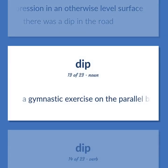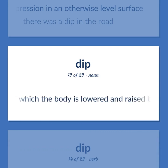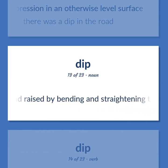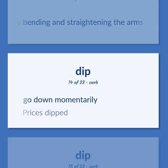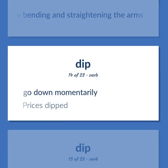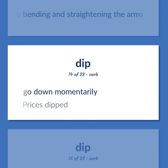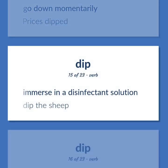A gymnastic exercise on the parallel bars in which the body is lowered and raised by bending and straightening the arms. Go down momentarily. Prices dipped. Immerse in a disinfectant solution. Dip the sheep.